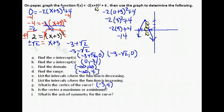For the decreasing intervals: decreasing is where the function goes downward as we travel to the right, which is the right-hand side of the graph. That starts at x = -3 and goes to infinity. For increasing — going upward as we travel to the right — that goes from negative infinity to -3.